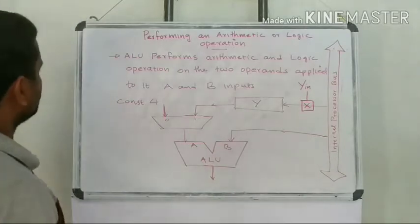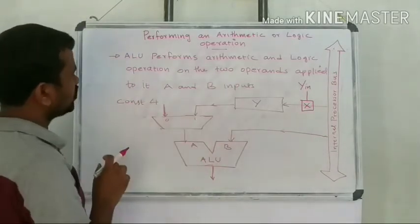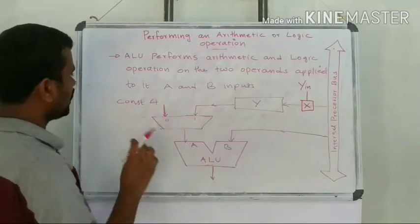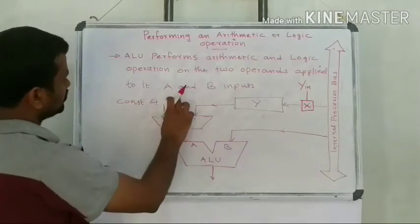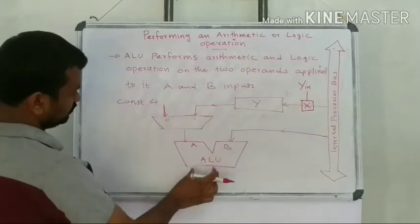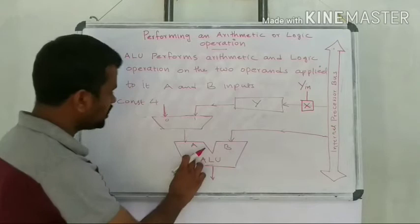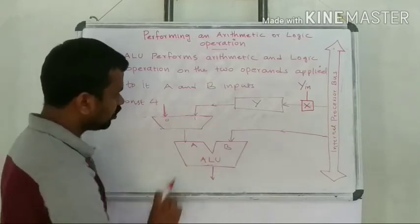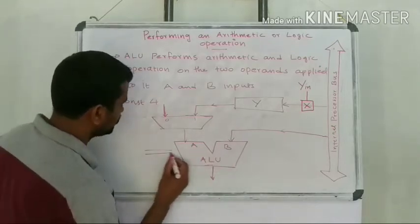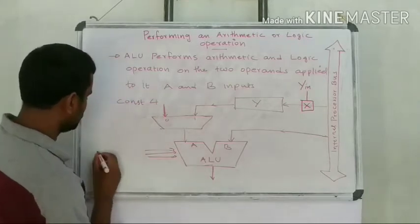The ALU performs arithmetic and logic operations on the two operands applied to its A and B inputs. In our diagram, there is an ALU with an A input, a B input, and an output. There is also a set of ALU control lines.